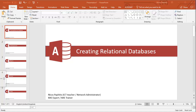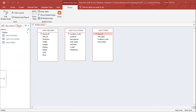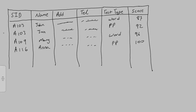In this short presentation I'm going to show you a little bit about relational databases and how we can create relationships. First I want to explain why we create relationships. Here we've got a simple table to hold scores for students. We can see that student John has two entries — one for a word test and one for a PowerPoint test — and every time this student takes a test there's going to be another entry.